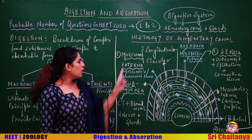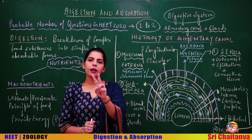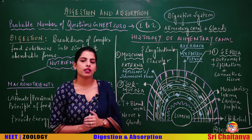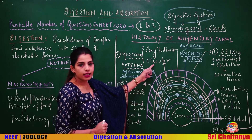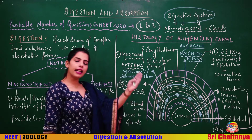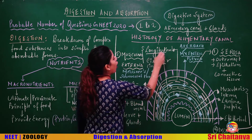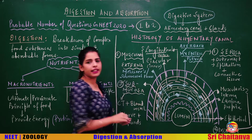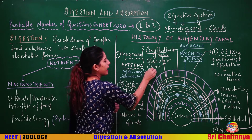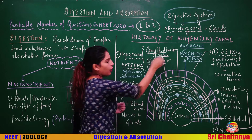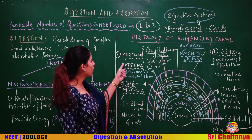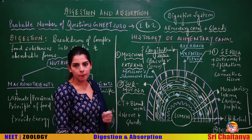Moving to the next layer — muscularis externa — it is composed of two parts. The inner part is circular muscles and the outer part is longitudinal muscles. An easy way to remember: circular has 'I' — inner layer; longitudinal has 'O' — outer layer. So: inner circular, outer longitudinal — this makes up muscularis externa.